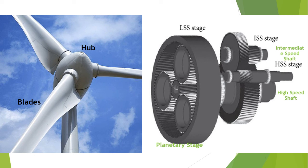Regarding wind direction, an upwind turbine is so called because it operates when the wind is facing the blades. A typical modern wind turbine will start to generate electricity when the wind speed reaches from six to nine miles per hour — this speed is known as the cut-in speed.